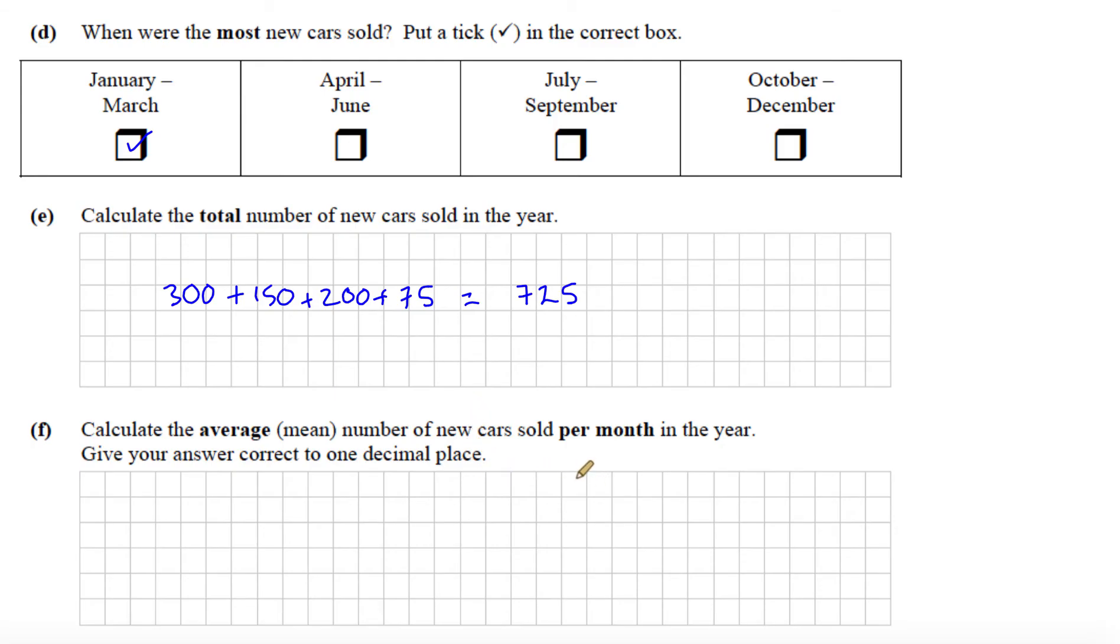And finally, Part F: Calculate the average mean number of new cars sold per month in the year. Give your answer correct to one decimal place. So if we're looking for the average per month, well, the total number of cars sold was 725. If we're looking for the average per month, we're going to divide that by 12. This is 12 months in a year. So 725 divided by 12. If we do that in the calculator, we get 60.41666 recurring. And they've asked us to round this to one decimal place. So that would be equal to 60.4. And that's the end of question number four.